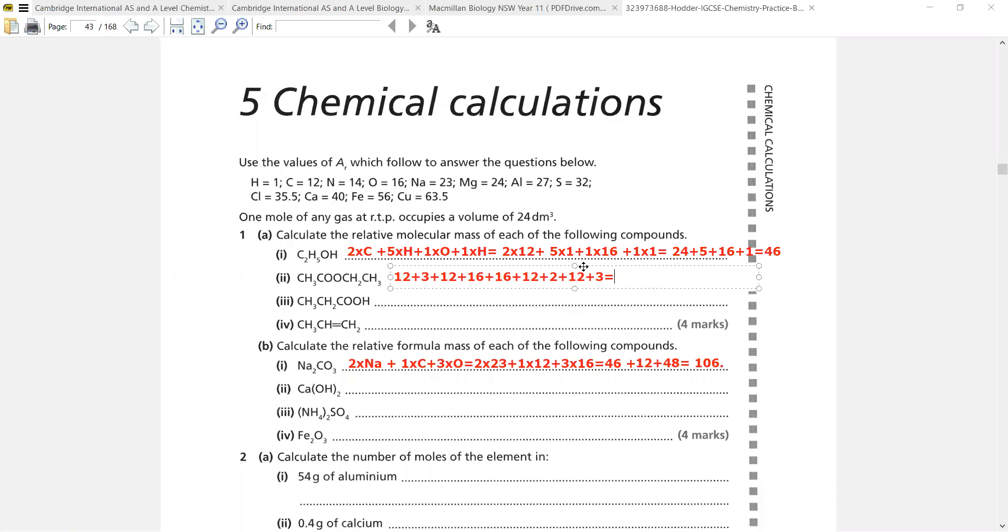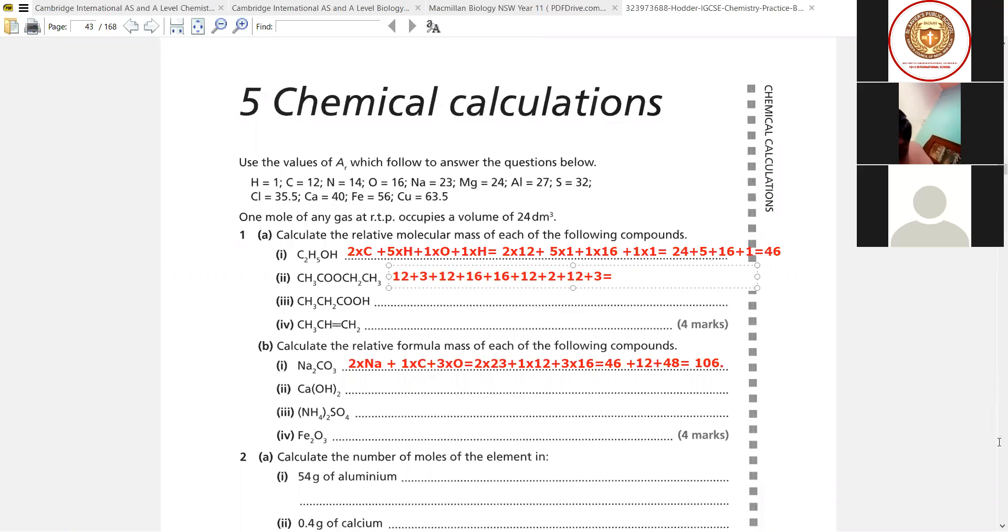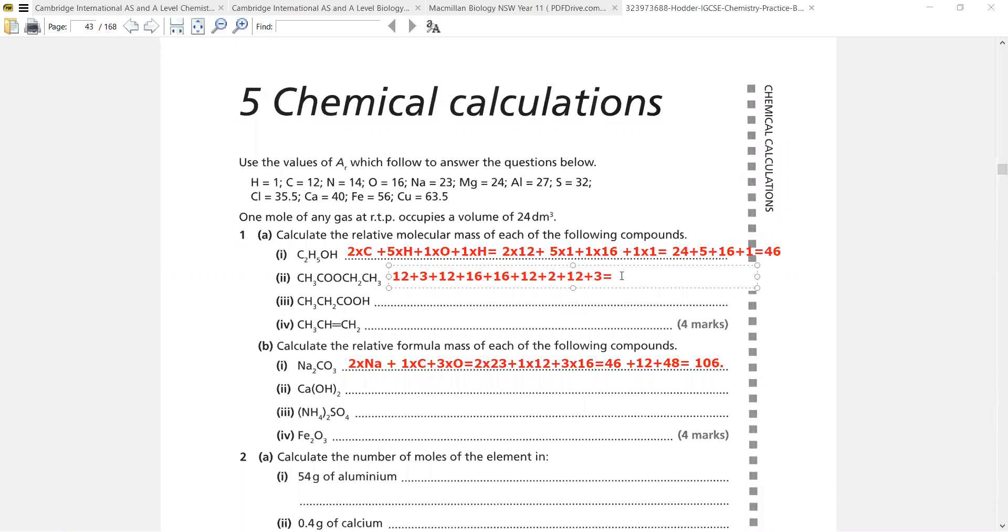Though you people are allowed to use calculators, I should say that you do this mentally. 12 plus 3 is 15, plus 12 is 27, and 16 is 43, 59, 71, 73, 76 plus 12 is 88. So you people did absolutely correct, it is 88. Is it okay to you? Yes sir. I hope no more doubts are there. Continue with other sums.